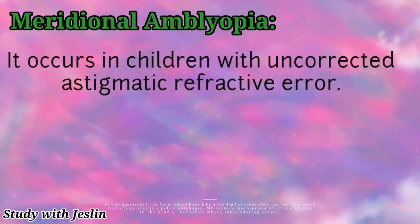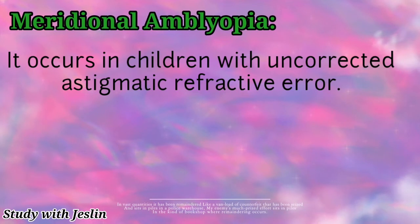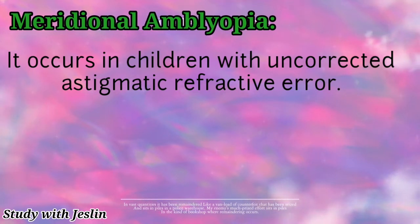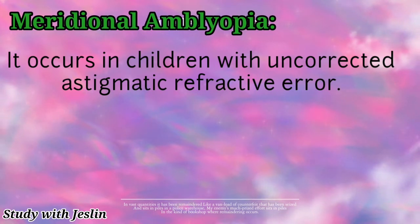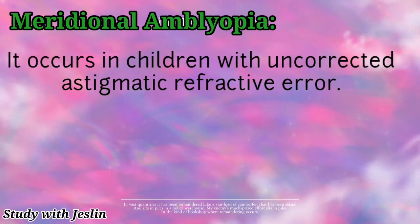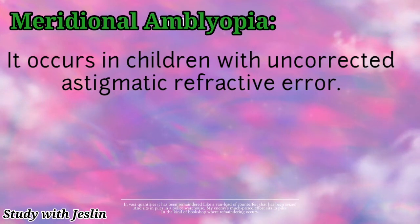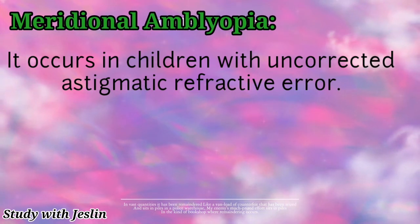The next one is meridional amblyopia. It occurs in children with uncorrected astigmatic refractive error. There is an astigmatism problem causing this type of amblyopia, which is called meridional amblyopia.